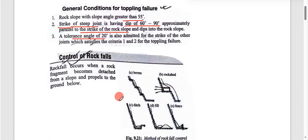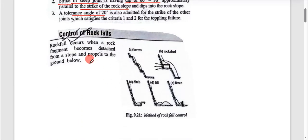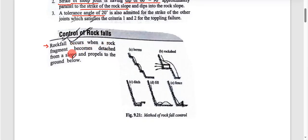Rock fall occurs when a fragment becomes detached from the slope and propels to the ground below.